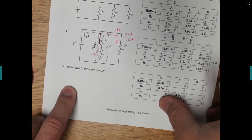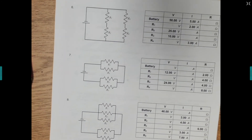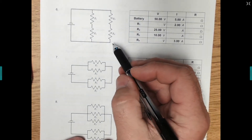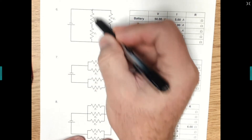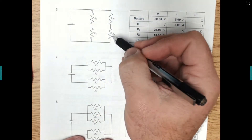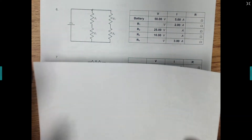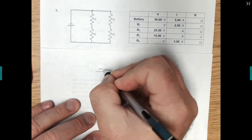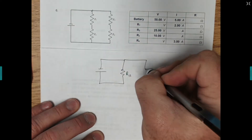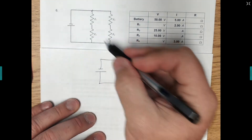We're going to skip number 5 for now because we have to draw the circuit, and look at numbers 6 through 8. On number 6, as I come out, there's a choice, so it's parallel. But down each branch, it's series — so we have two sets of series resistors within a parallel circuit. We can redraw this with equivalent resistors R12 and R34.